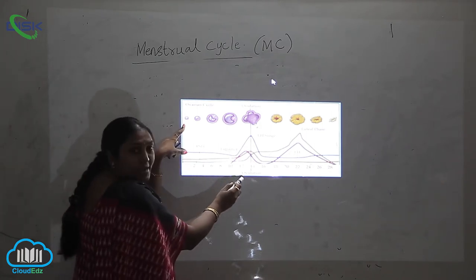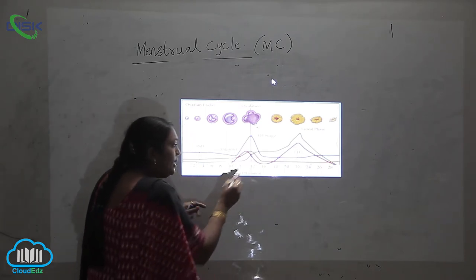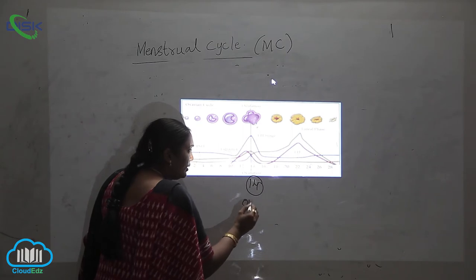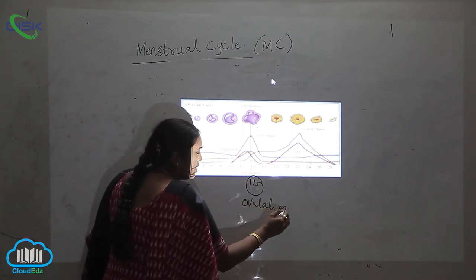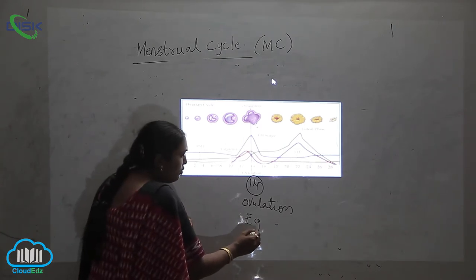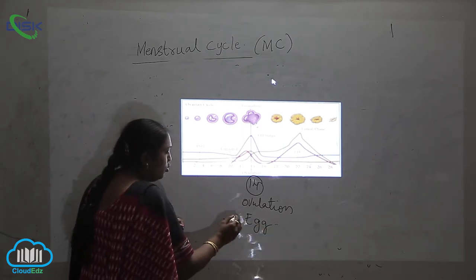Days 2, 4, 6, 8, 10, and 12. At the 14th day ovulation occurs. What is meant by ovulation? Release of egg, release of egg from the ovary.